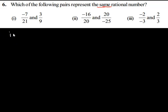The first question is negative 7 upon 21 and 3 upon 9. As you can see, negative 7 upon 21 is a negative rational number.